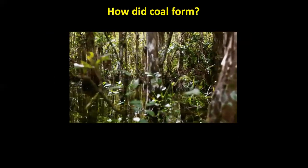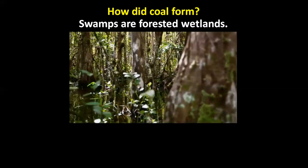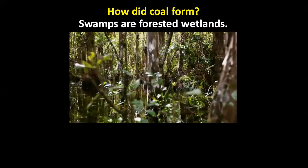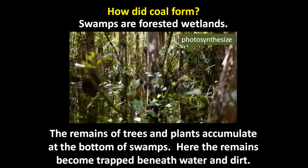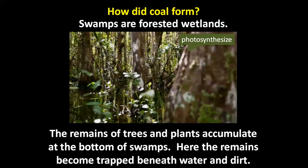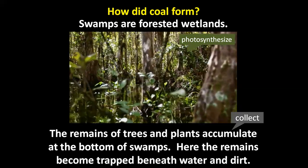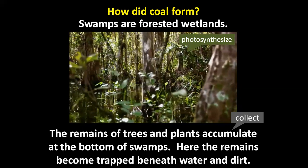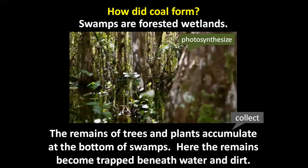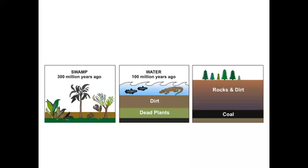How did coal form? Swamps are forested wetlands. Trees and plants photosynthesize. The remains of trees and plants accumulate and collect at the bottom of swamps, where they become trapped beneath water and dirt. This shows the swamp millions of years ago, with dead plants trapped beneath dirt and water, eventually forming coal beneath rocks and dirt.